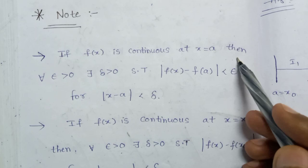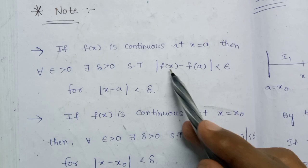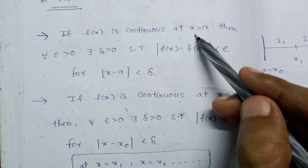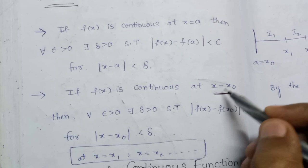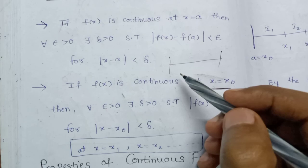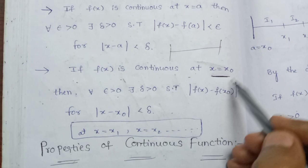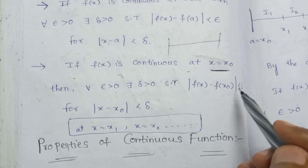If f of x is continuous at x equal to a, we are going to show you this. If x is equal to a, x is equal to 1. We will add x to x0. We don't have a partition, we have an epsilon partition. If x is continuous at x equal to x0, that means...